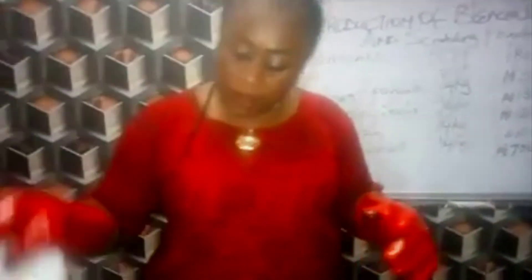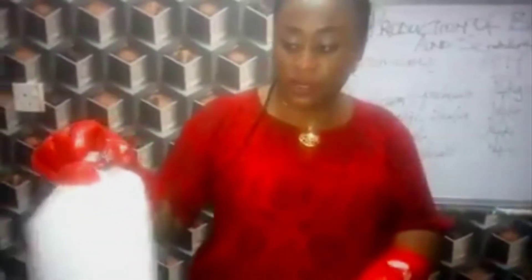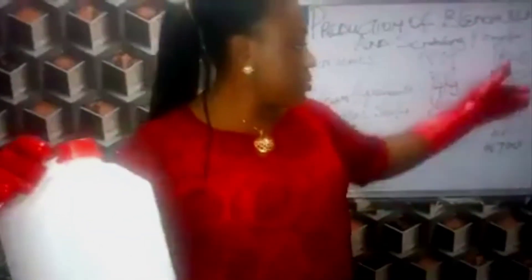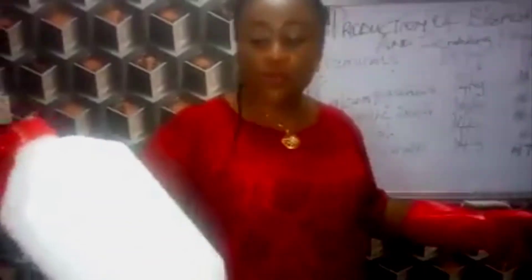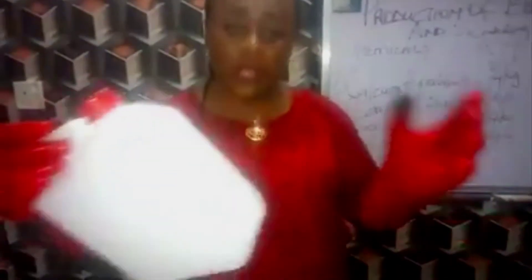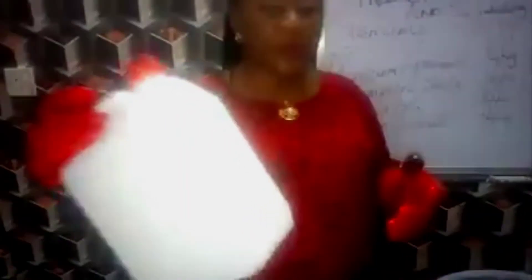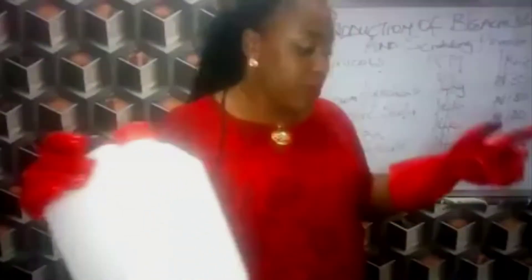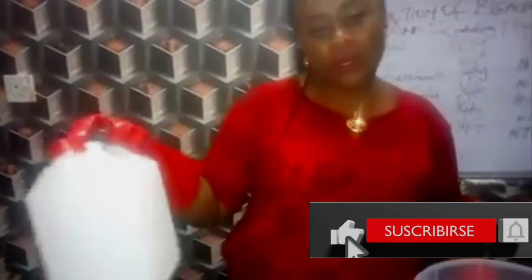Now, I have here a container I intend to use to package this. This is 4 liters — I have 2 of them. If we were to run the cost, this container in the market is about 200. Some places say 150, but let's assume 200 is what you got it for. And for the 2, that's 400. 400 plus the chemical cost is 1,100. And then, the least you can actually sell this is about 1,500 to 2,000.